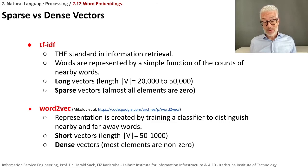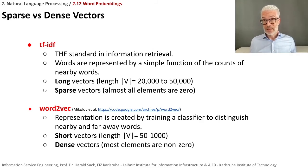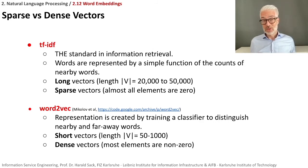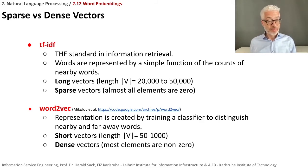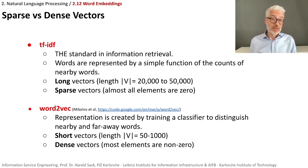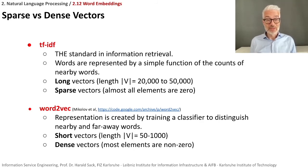This has become a standard way to represent meaning in natural language processing. We distinguish between sparse and dense vectors. In information retrieval, sparse vectors are common — similar to one-hot encoding but representing co-occurrences by counts, or by TF-IDF, which is a standard measure to determine the importance of a word for a document. TF-IDF takes the term frequency and divides it by the logarithm of the inverse document frequency. These sparse vectors have 20,000 to 50,000 dimensions and most elements are zero.